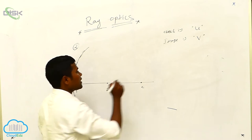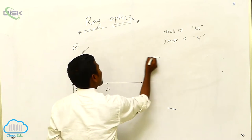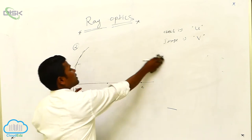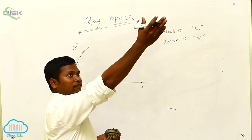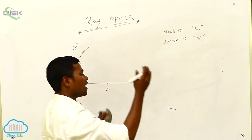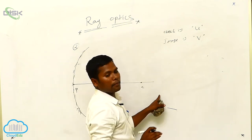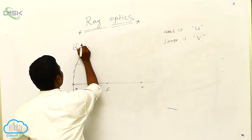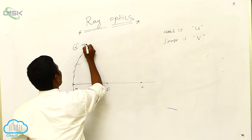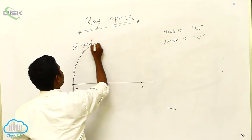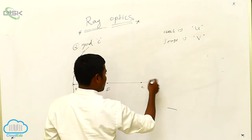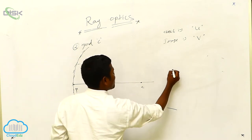Now I am considering first one is R1. Previously, where is my object? My object is at infinite distance. Now I am coming near to the mirror. So, behind C — or back of the C. Now I am thinking my object is here.